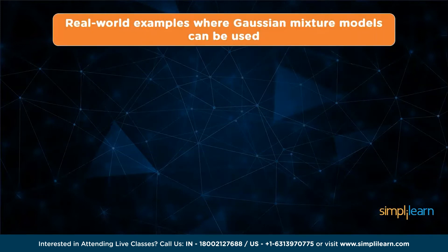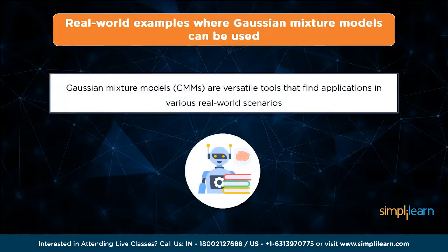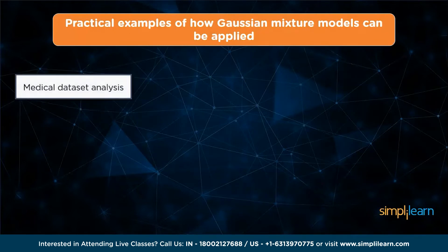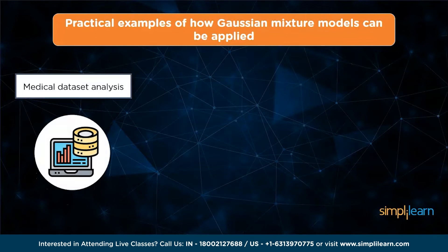Gaussian mixture models are versatile tools that find applications in various real-world scenarios. They are particularly useful when dealing with large datasets where identifying clusters is challenging. GMMs excel at efficiently discovering clusters, outperforming algorithms like k-means. One practical example is medical dataset analysis: GMMs can segment medical images or identify patterns within datasets by clustering patients based on similar symptoms, assisting in detecting disease subtypes, predicting outcomes, and revealing previously unknown patterns in large-scale patient records.